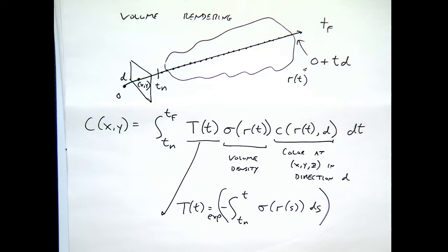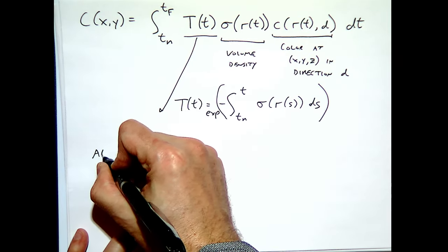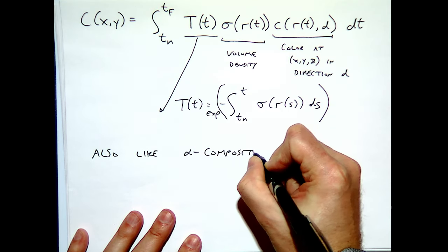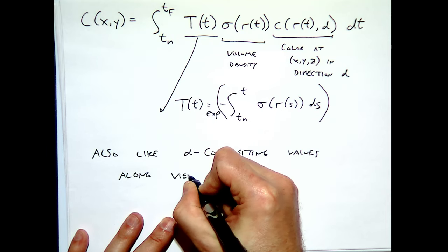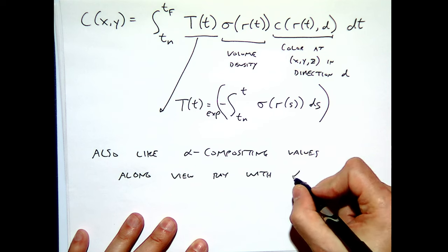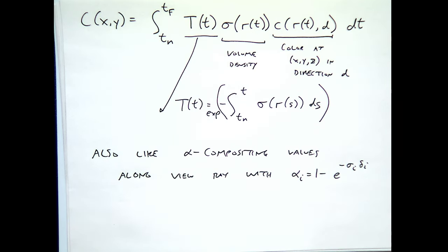This is also like alpha compositing values along the view ray — an alpha matte is 1 in foreground and 0 in background. You can stack up an image by generating partially transparent alpha mattes; it's just like one minus the transmissivity. So if I have this NERF, this is how I generate any new image — sample x, y, then render out from the NERF. That's actually pretty straightforward.